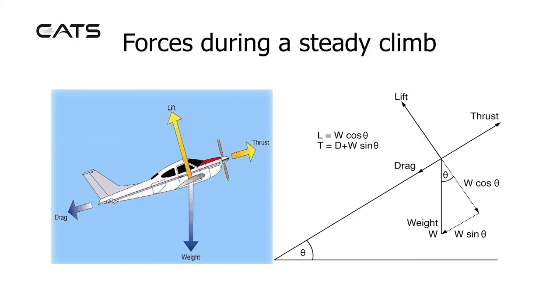The forces during a steady climb: the lift vector is tilted rearwards, thrust acts along the flight path in a forward direction, and drag acts rearwards.